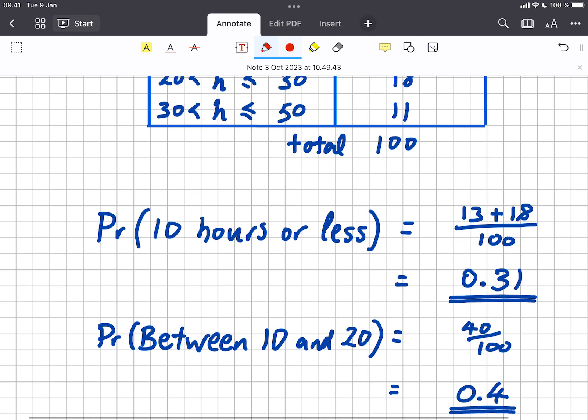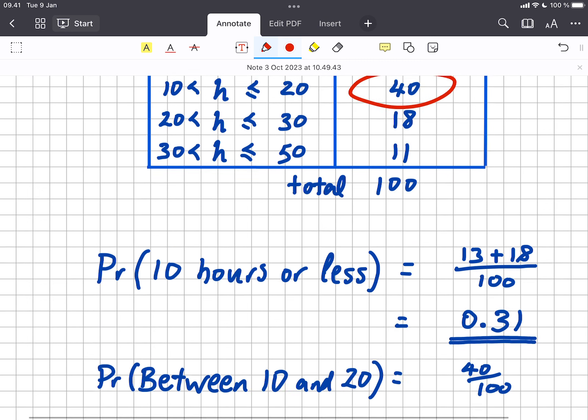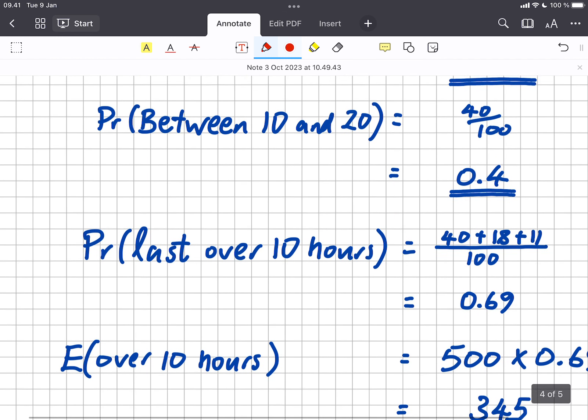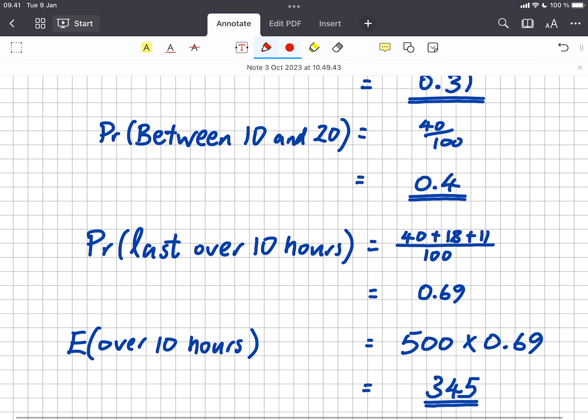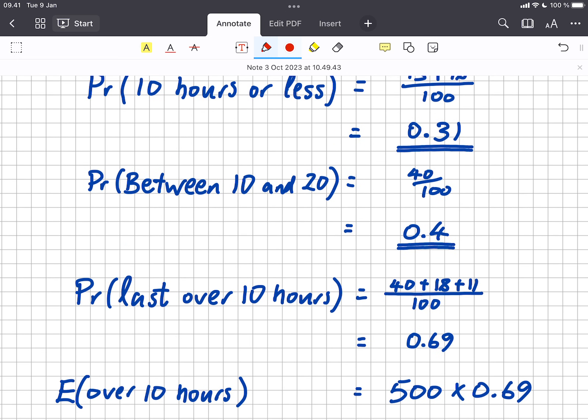The next question asks for the probability of between 10 and 20. We've observed between 10 and 20 happening 40 times, so that's 40 times out of 100, 40 hundredths or 0.4 as a fraction. The last question asks us the number that you would expect out of 500 to last for over 10 hours. Well, first of all I calculated the probability of a randomly selected one lasting over 10 hours, and the number that lasted over 10 hours that we observed in the table was 40 plus 18 plus 11. So that's 40 plus 18 plus 11 out of 100, comes to 0.69.